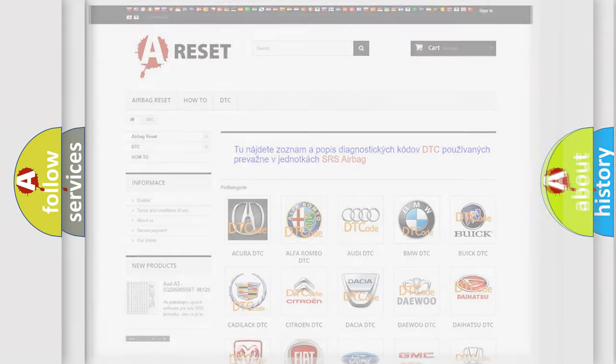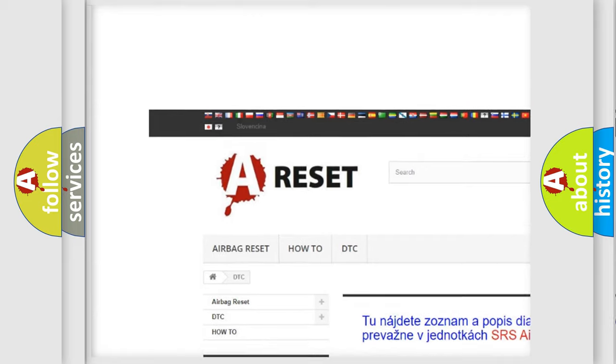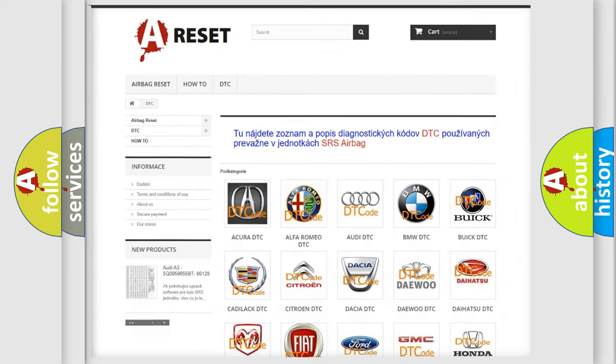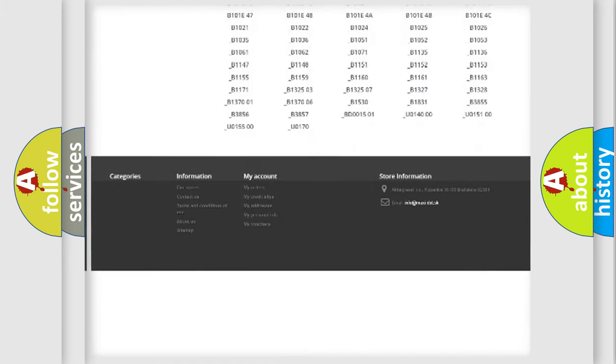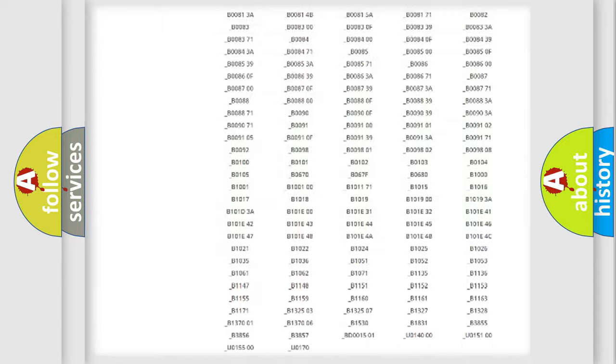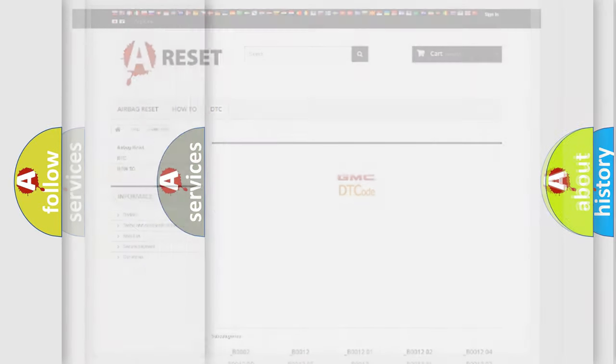Our website airbagreset.sk produces useful videos for you. You do not have to go through the OBD2 protocol anymore to know how to troubleshoot any car breakdown. You will find all the diagnostic codes that can be diagnosed in GMC vehicles, and many other useful things.